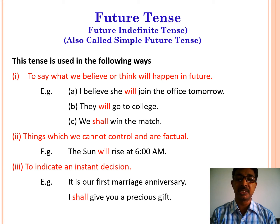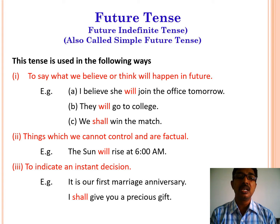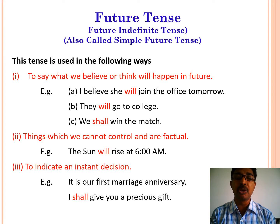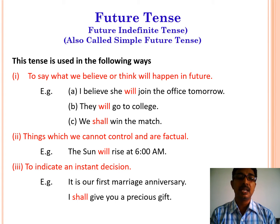The first one is simple future, also called future indefinite tense. This tense is used in the following ways. Simple future tense is used to say what we believe or think will happen in the future. For example: I believe she will join the office tomorrow. They will go to the police. We shall win the match.